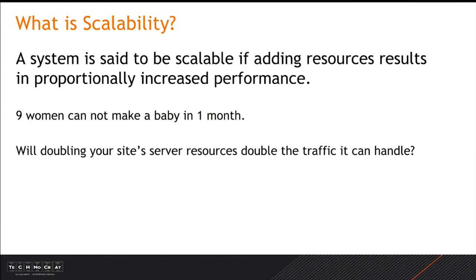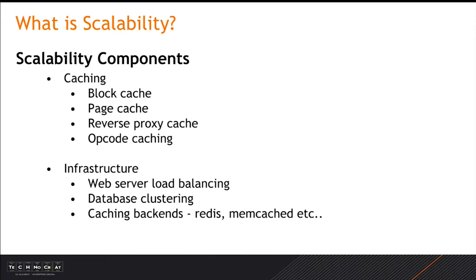Just because you double the amount of resources you have available doesn't necessarily mean that your site's going to be twice as fast or be able to serve twice as many people. You've got to have the infrastructure in place to be able to do that. With scalability, things we are talking about are your caching layers — Drupal has block caching, your page cache, you're able to put reverse proxy caches in front of your web server. Opcode caching — PHP's caching of your actual scripts. And infrastructure: are your web servers load balanced? Are you able to set up a MySQL cluster? Do you have a high performance caching back end like Redis or Memcached?